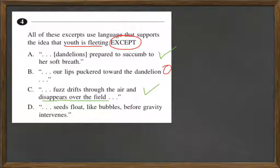Seeds float like bubbles before gravity intervenes. So they go along, but then gravity brings them down and it's gone to the ground forever. Alright, so B is our answer.